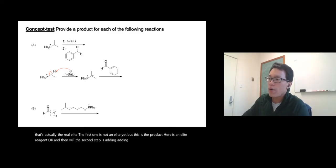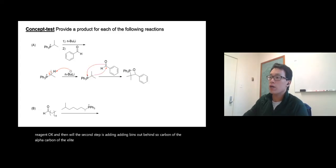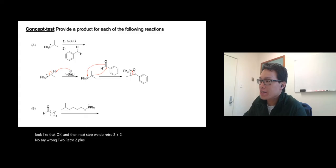The second step is adding benzaldehyde. The alpha carbon of the ylide attacks the carbonyl carbon, doing 2+2 cycloaddition to make a four-membered ring like that. Then the next step we do retro 2+2 cycloaddition and you get the product there.